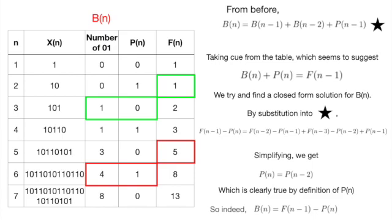A good thing to try when trying to solve a problem for a closed-form solution is to try and spot useful patterns in an attempt to guess the solution. This is exactly what we are going to do. Notice the hockey-shaped cells highlighted in red and green, which seem to suggest that B(n) plus P(n) equals F(n-1).